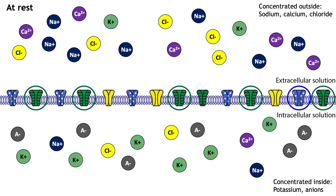How the ions are distributed across the membrane plays an important role in the generation of the resting membrane potential. When the cell is at rest, some non-gated or leak ion channels are actually open. Significantly more potassium channels are open than sodium channels, and this makes the membrane at rest more permeable to potassium than sodium.